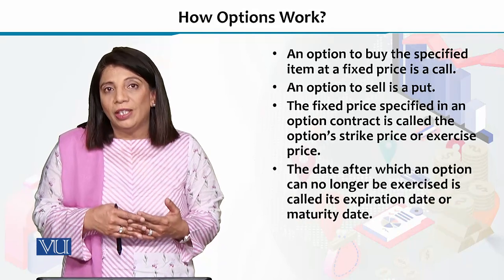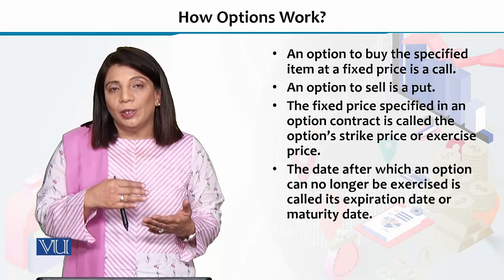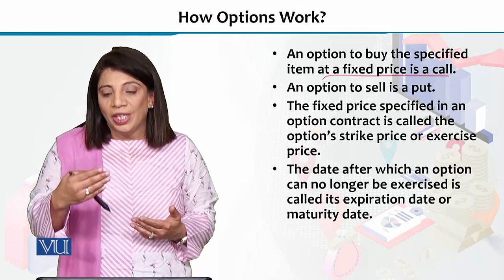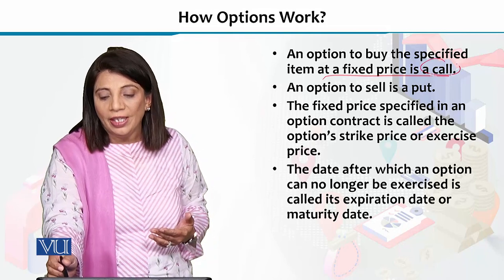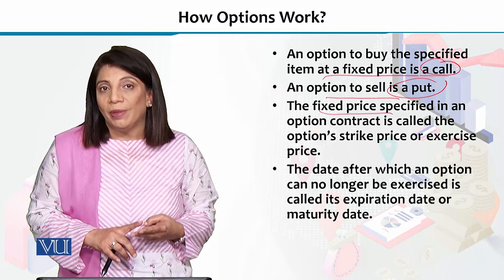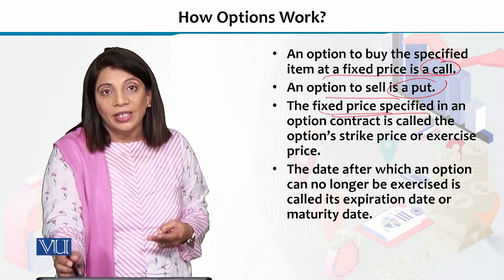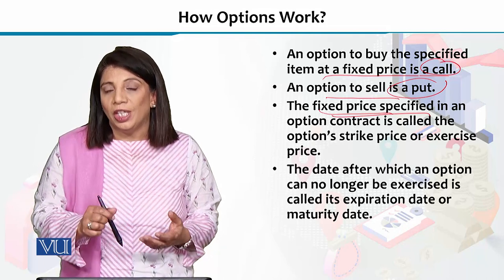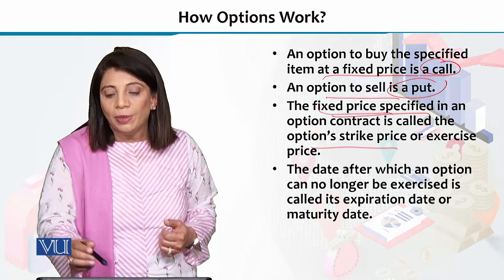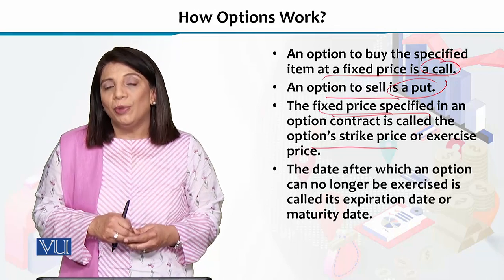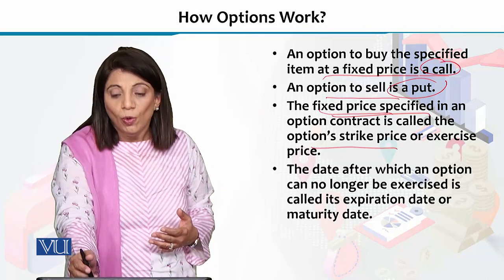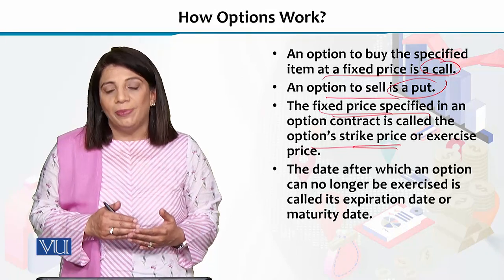Now if we look at the overall details of the call and the put option, we need to understand ke agar aap kisi fixed price ke upar option de rahe hain purchase karne ki, toh woh call kehlati hai. Sell karne ki option ka matlab hai ke hum put option ki baat karte hain. Wahan zaroori hai do cheezon ko pehle se decide karna — one is the fixed price ke aap is keemat pe ek certain time period ke upar jaake isko khareedo ya farokht kar sakte hain. Choice is there, it's not an obligation.